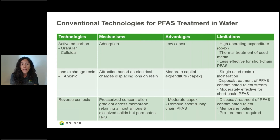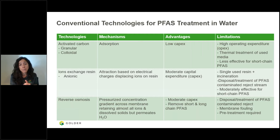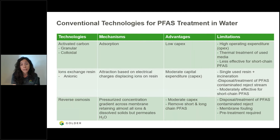Activated carbon is quite low in capital expenditure (CAPEX), but has quite high operating expenditure (OPEX). This is because you need to dispose of those media, often at high cost. Also, activated carbon is less effective for short-chain PFAS treatment.